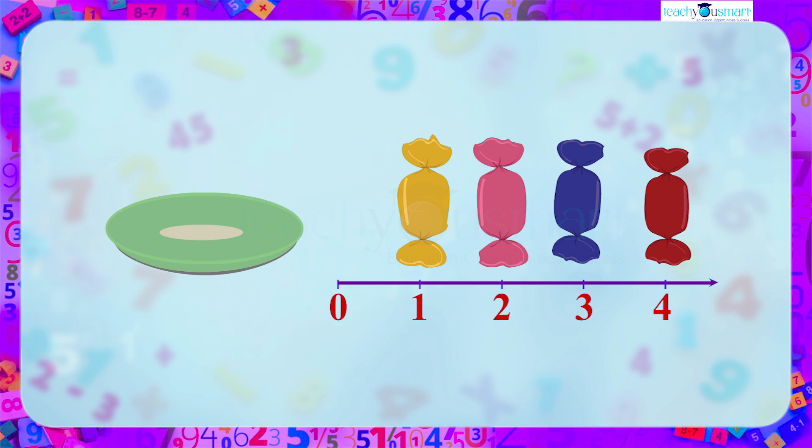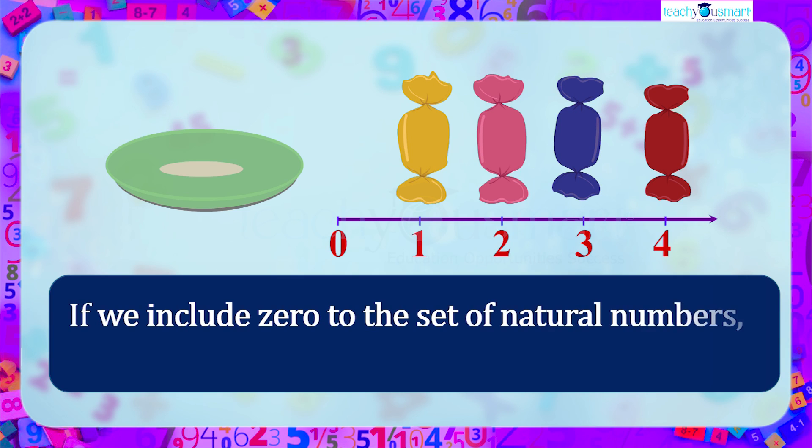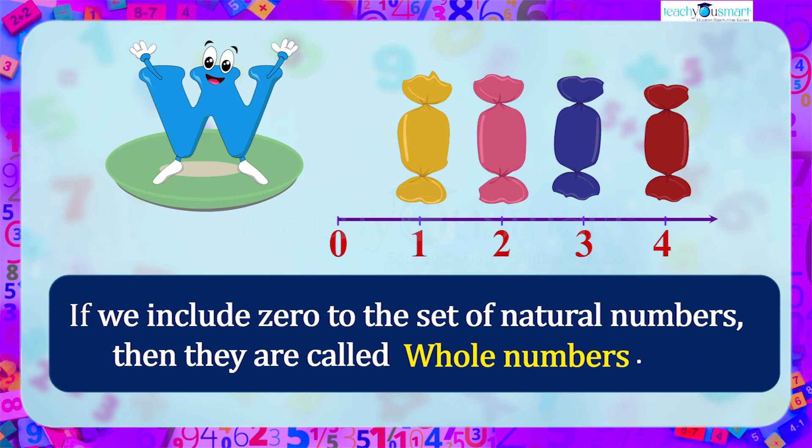If we include zero to the set of natural numbers, then they are called whole numbers, denoted by W. That is, 0, 1, 2, 3, 4, etc. up to infinity are called whole numbers.